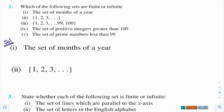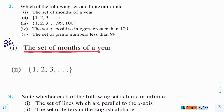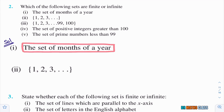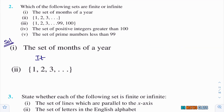Second problem: which of the following sets are finite or infinite? First bit: the set of months of a year. In a year, 12 months are there — January, February, March, up to December — total 12 elements. Number of elements in this set are finite, so it is a finite set.